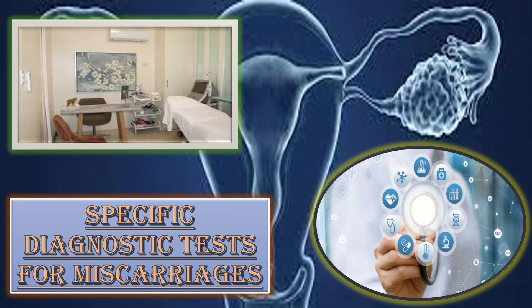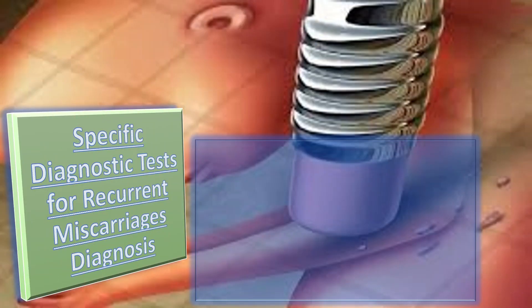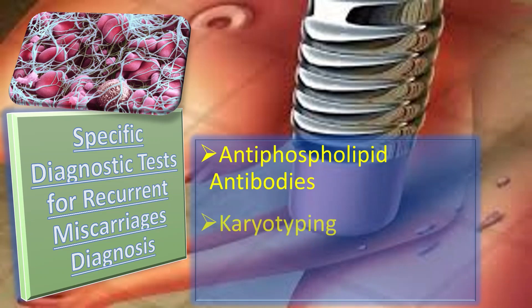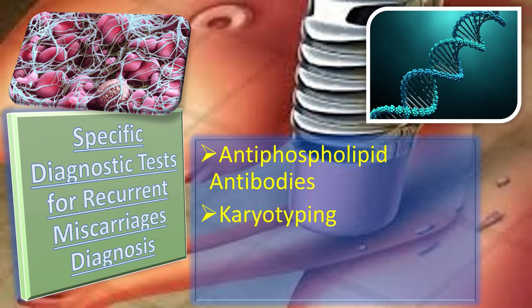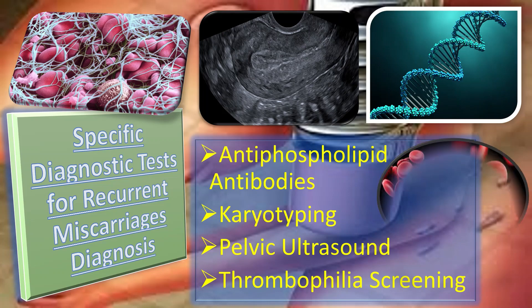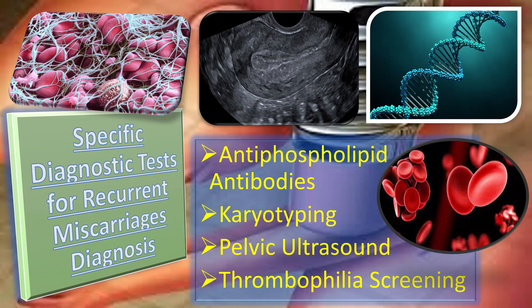If you want to watch more videos about recurrent miscarriages, go to the link in the i button in the top right corner of this video. So, what are those specific diagnostic tests for recurrent miscarriages diagnosis? We have antiphospholipid antibodies testing, karyotyping, pelvic ultrasound, and thrombophilia screening. One by one we will discuss all these tests.